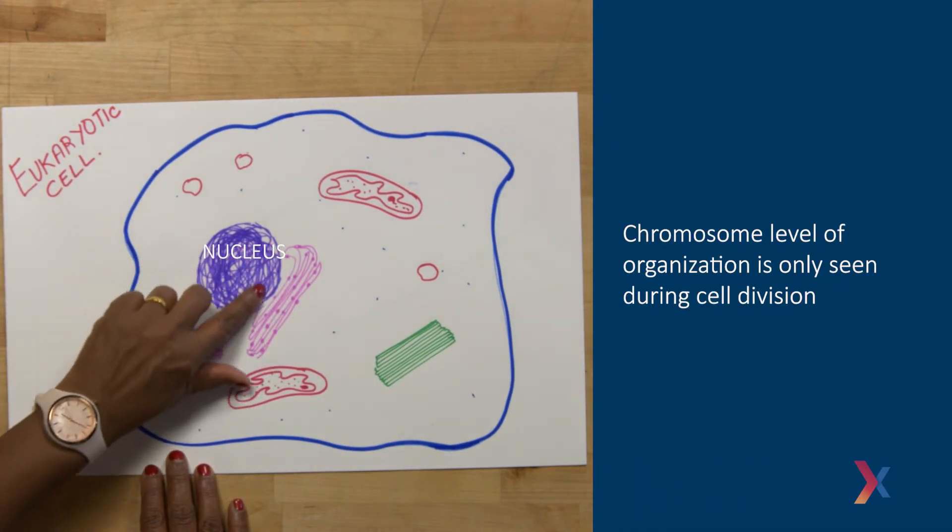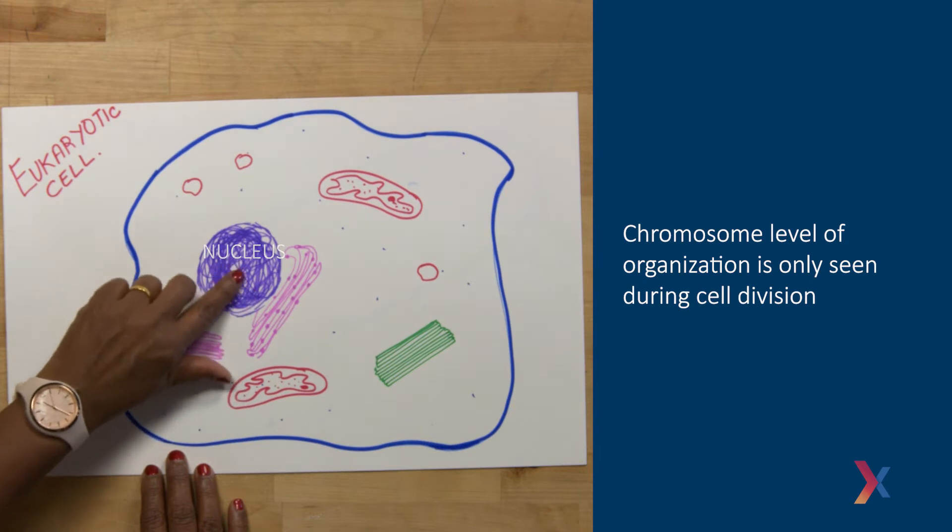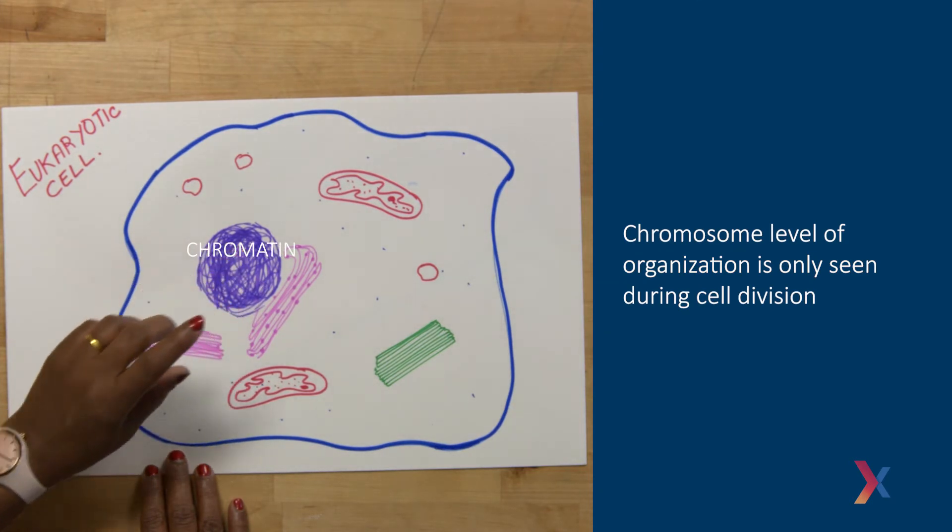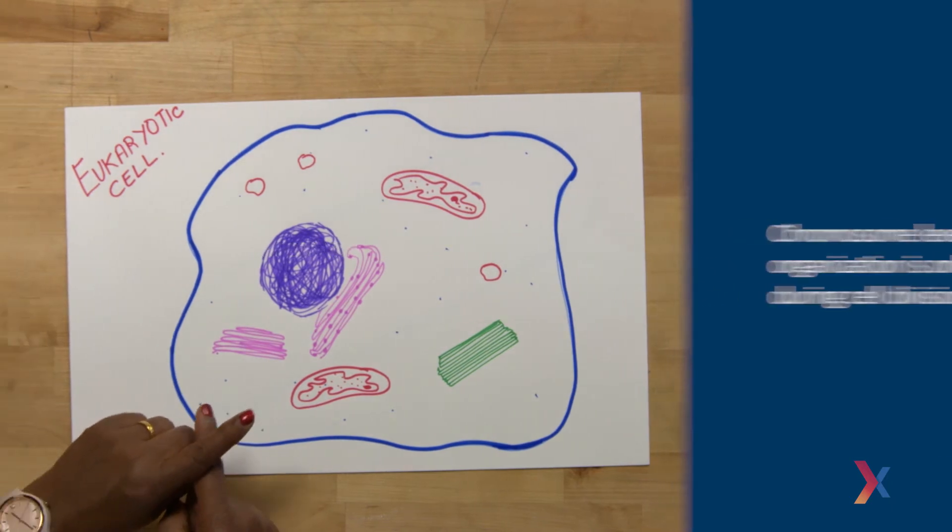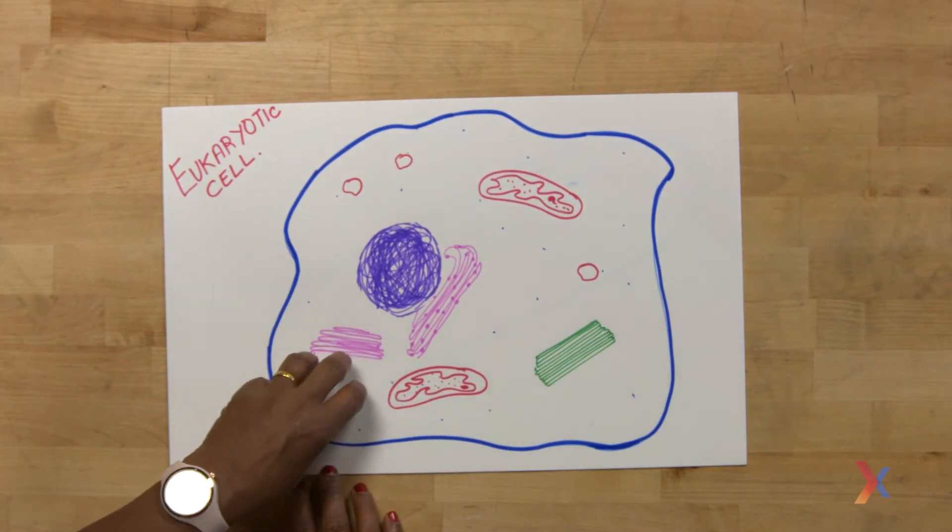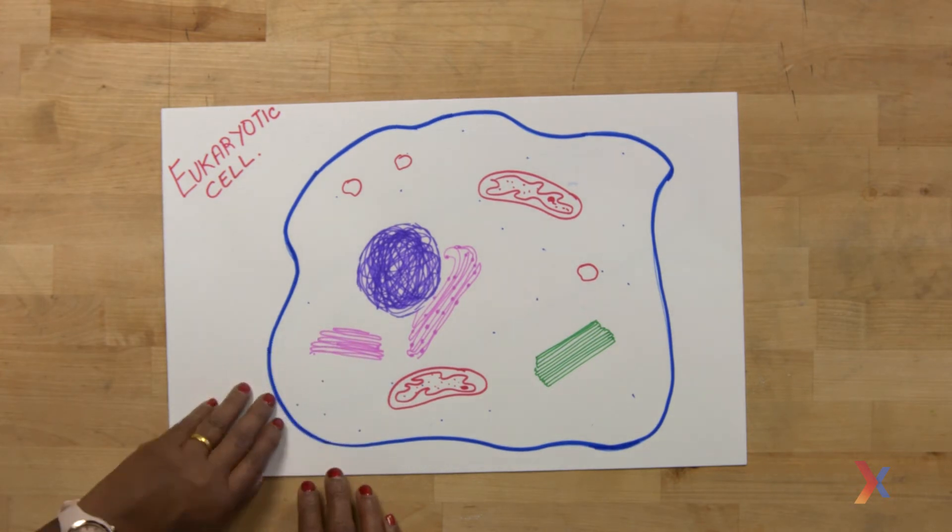And within the nucleus, you see the DNA in the form of these diffused fibers, which is referred to as chromatin. You do not see the typical X-shaped structures, chromosomes, unless the cell is undergoing division or getting ready to divide.